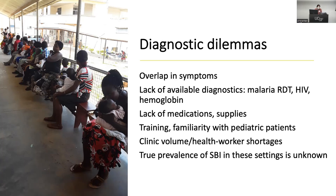There's also a lack of medications — people use what's available whether it's the right choice or not. A lot of providers are lower-level and may not have had extensive medical decision-making training or specific training for pediatrics. There are very high volumes, health worker shortages, strikes, and they're seeing tons of patients at a time without much time for education or return precautions. And we really don't know the actual prevalence of severe bacterial illnesses in these settings because microbiology capacity is so limited.